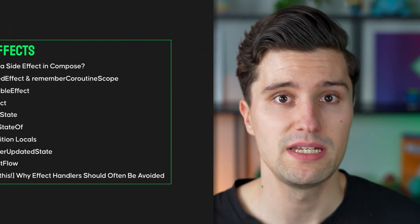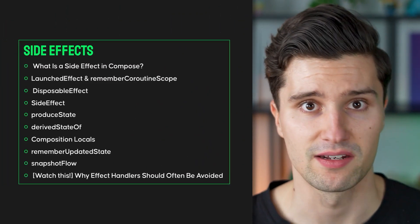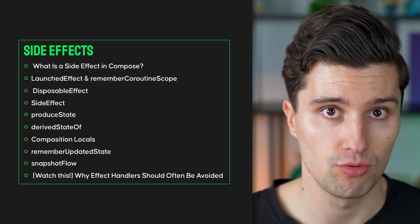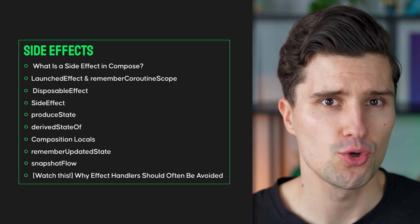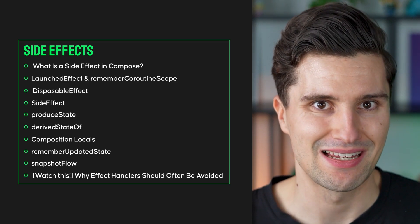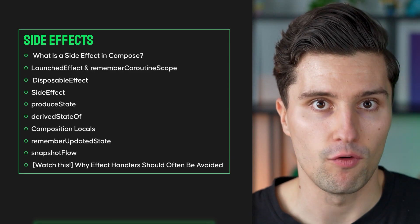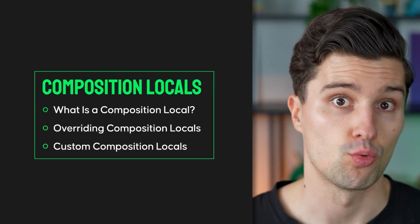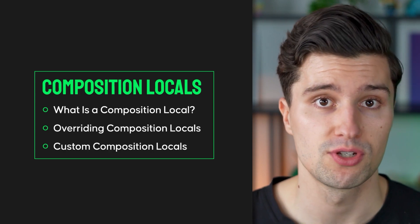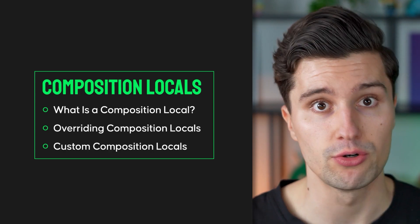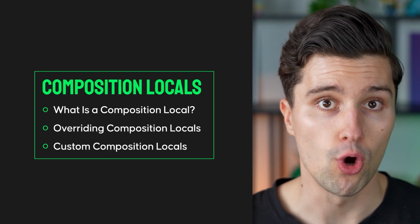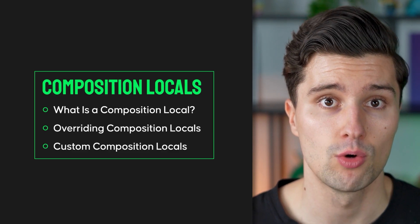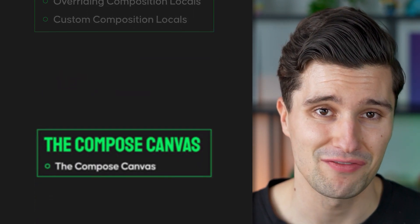In section five we deep dive into side effects and effect handlers — you'll be able to spot side effects in your Compose UI and understand why effect handlers like LaunchedEffect should usually be avoided. Section six then dives into composition locals: what they are, how you can create your own to share data between composable functions, normal versus static composition locals, and how you override existing composition local values.